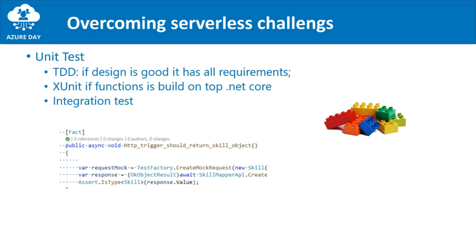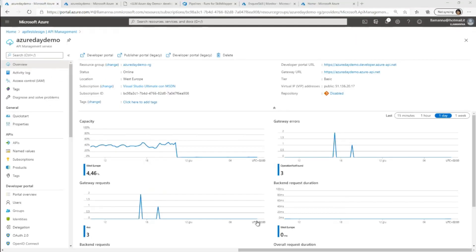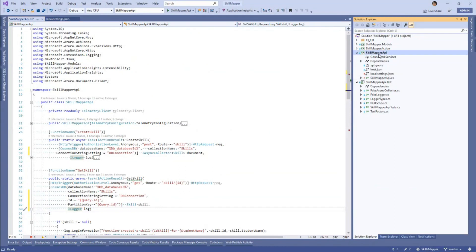Se si è fatta bene la fase di design, si può cominciare a scrivere il codice seguendo i principi del Test Driven Development. Se le function sono costruite su .NET Core, si possono scrivere unit test prima ancora del contenuto della function. Per effettuare un test locale, oltre allo unit test, è consigliabile avere installato Azure Storage Emulator, CosmoDB Emulator e Storage Explorer. Andiamo direttamente a vedere cosa significa creare function serverless con Visual Studio.